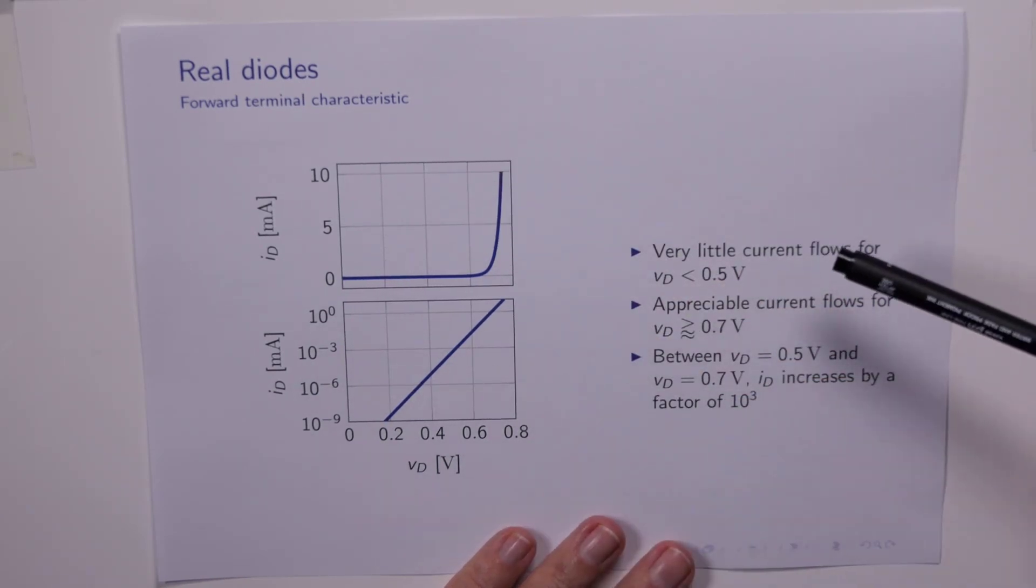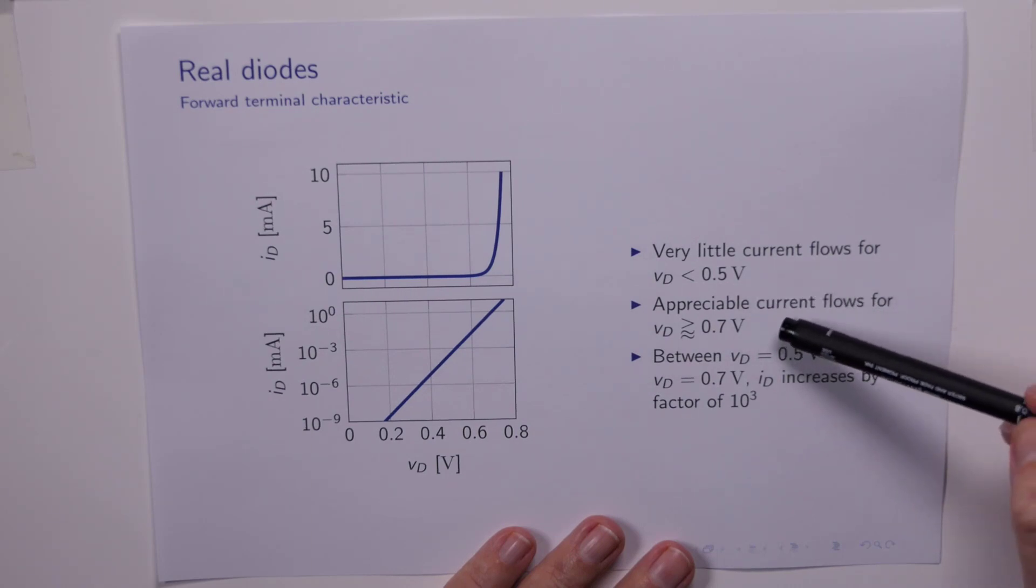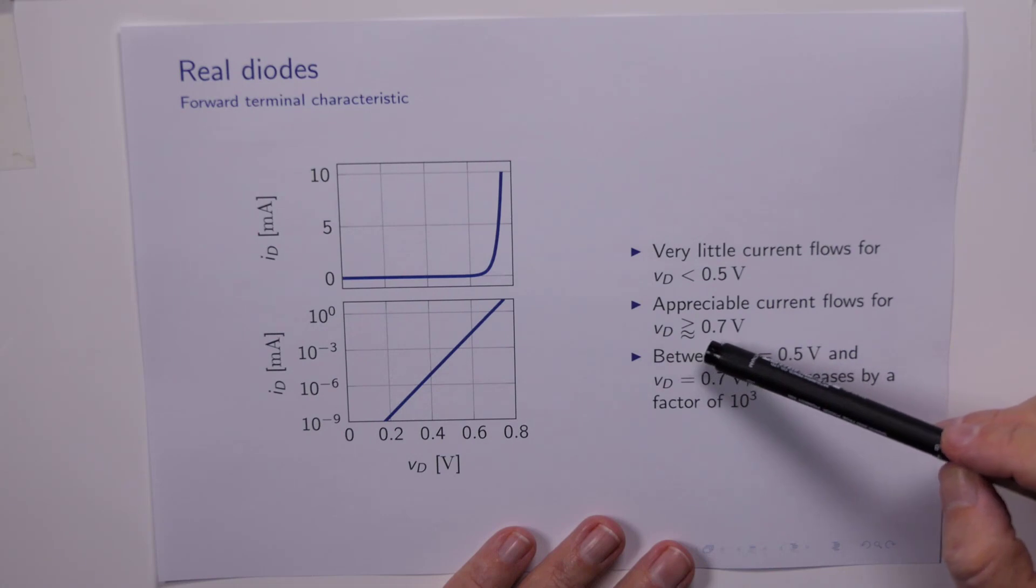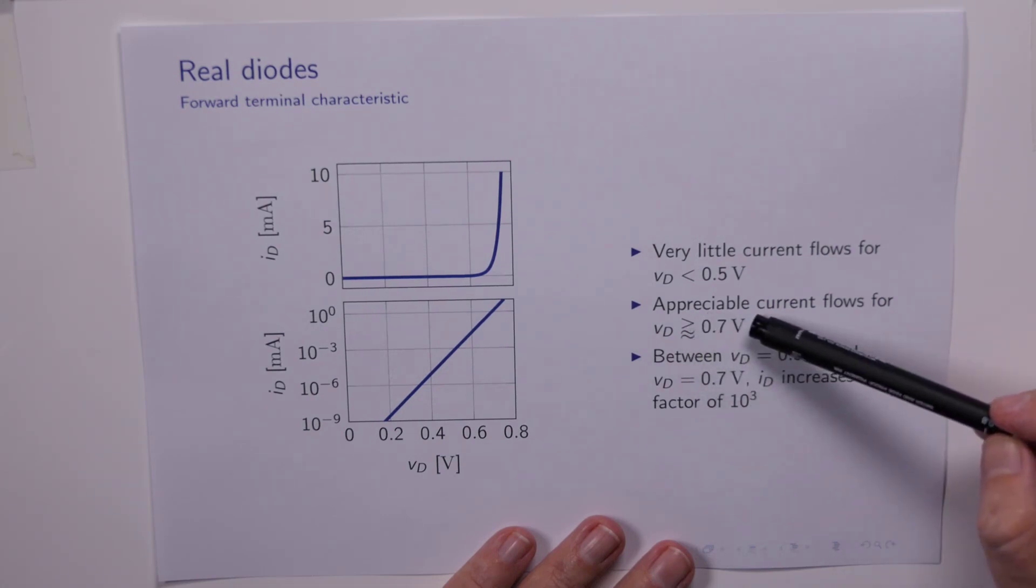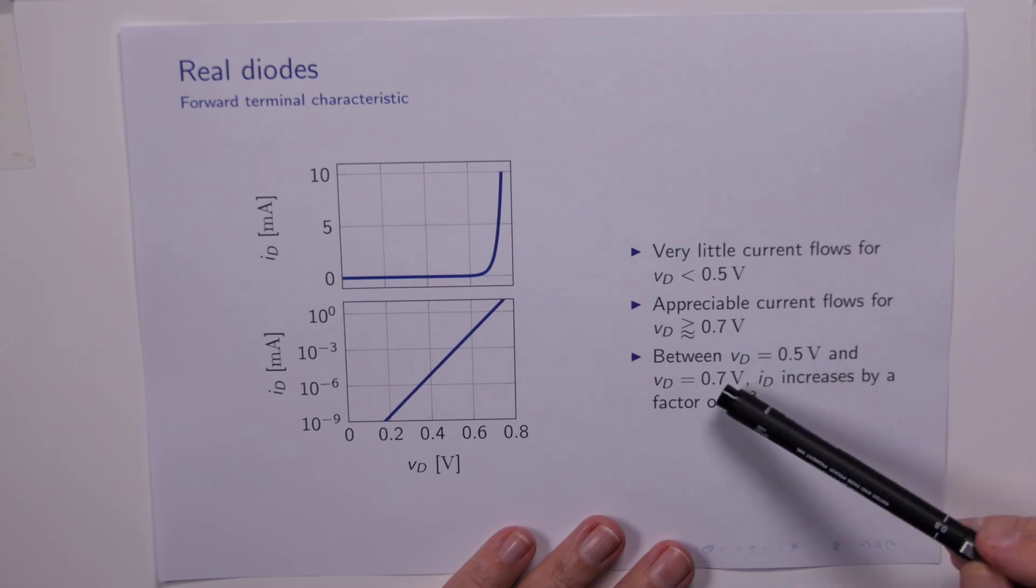Just summarizing this forward characteristic, we see that very little current flows for VD less than half a volt. We only get appreciable current flow, namely in the milliamp range, for VD approximately greater than 0.7 of a volt. And just to give an idea of how rapidly the current increases between VD equals 0.5 and 0.7 of a volt: in the space of 0.2 volts, ID increases by a factor of 1000.